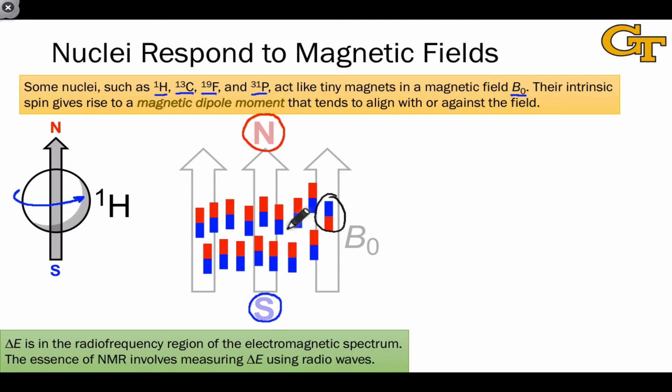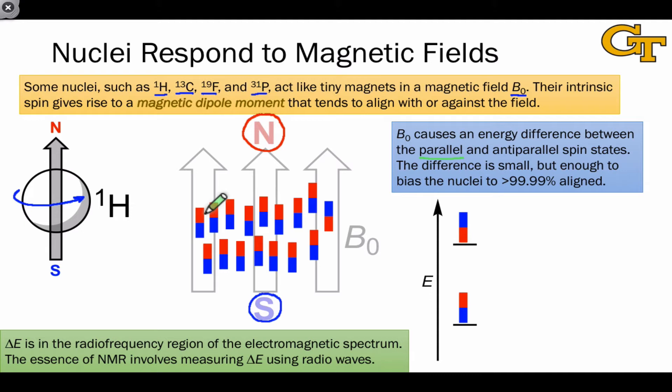Notice here that the applied field, which is in the background in lighter color, has the northern end at the top and the southern end at the bottom. Most of the nuclear magnetic moments are aligned this way, with the red end pointed up towards the northern side of B0. A few of them are oriented in the opposite direction. And these orientations suggest an energy difference between the red up and blue up orientations, because the parallel spin state is lower in energy than the anti-parallel arrangement.